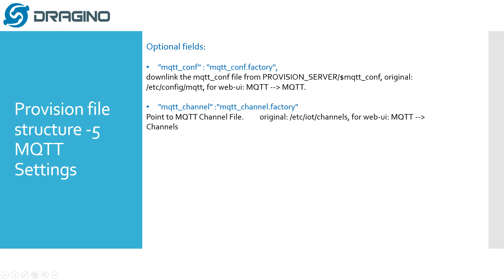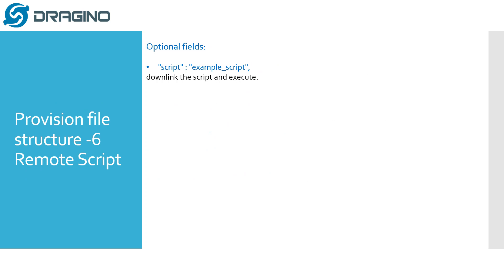This page covers the MQTT settings, which are similar to the loader run settings — they point to an MQTT config file and an MQTT channel factory file. There is also a remote script field: you can place a remote script on your server, and the gateway will download and process the script. This is useful for changing settings that cannot be changed through other provision file fields.